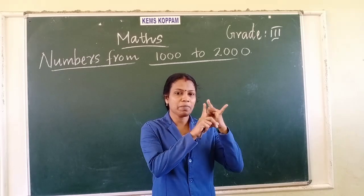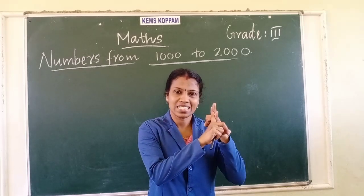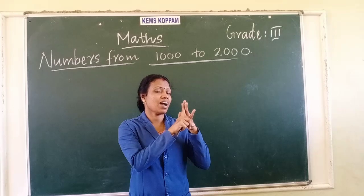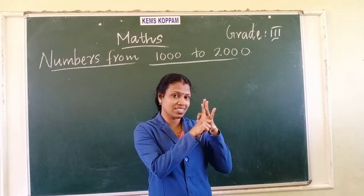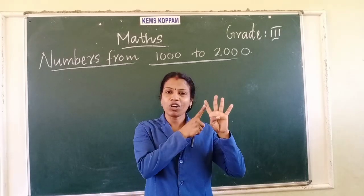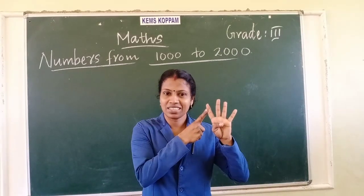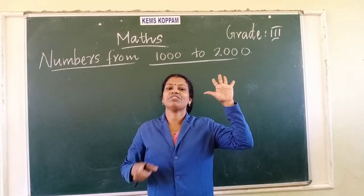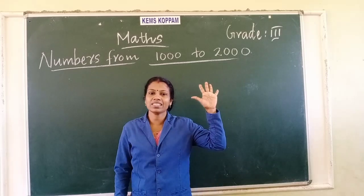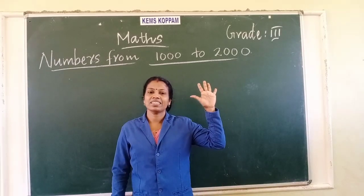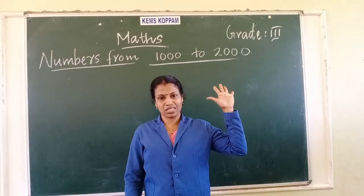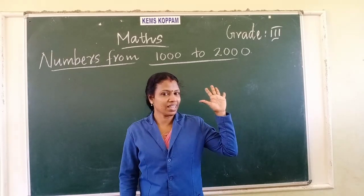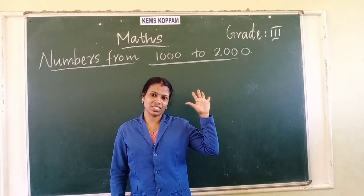Second place? Tens. Third place? Hundreds. Fourth place? Thousands. And the fifth place? Ten-thousands.